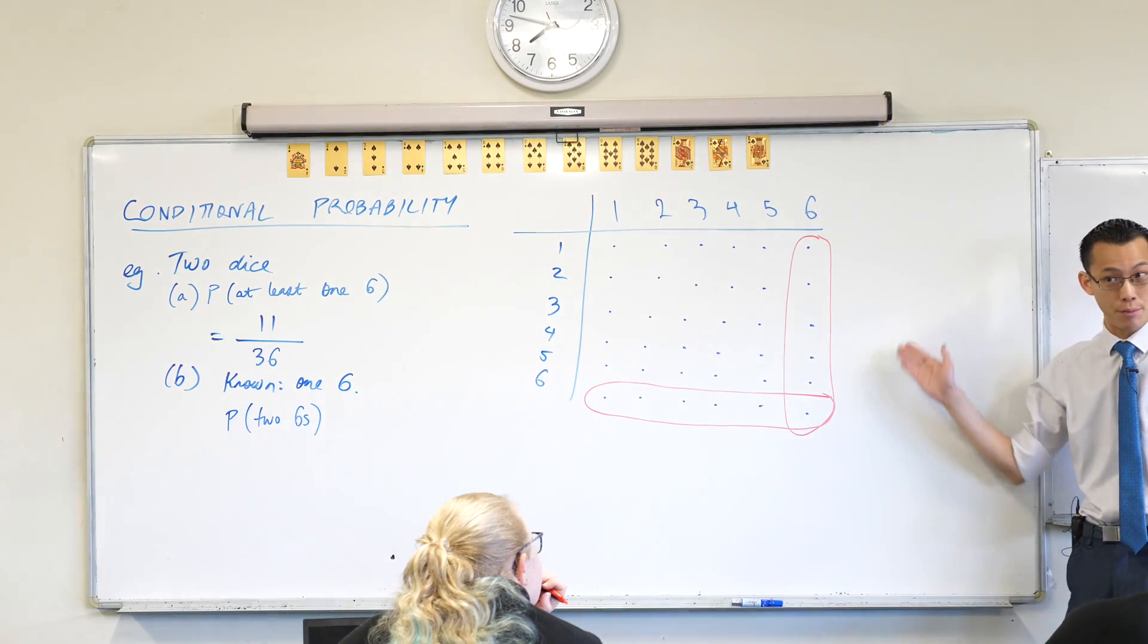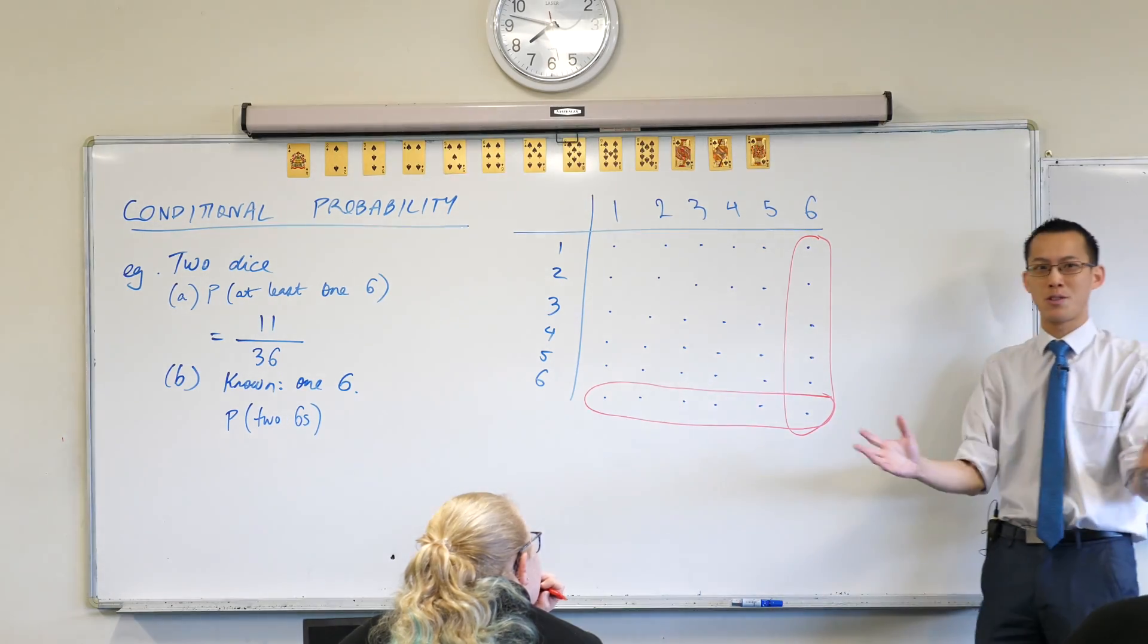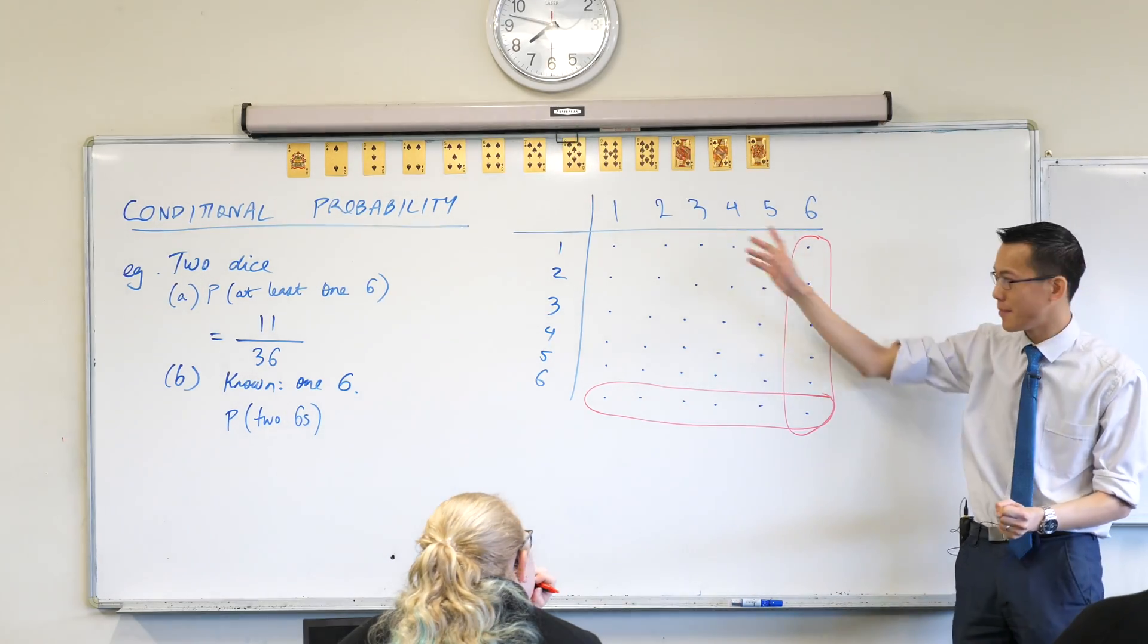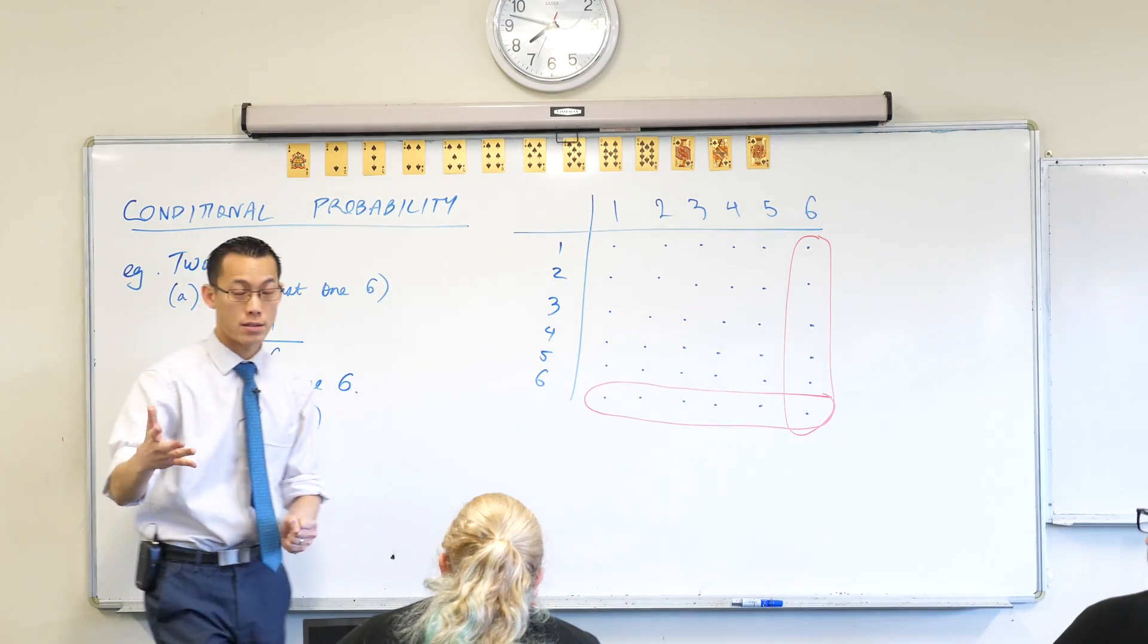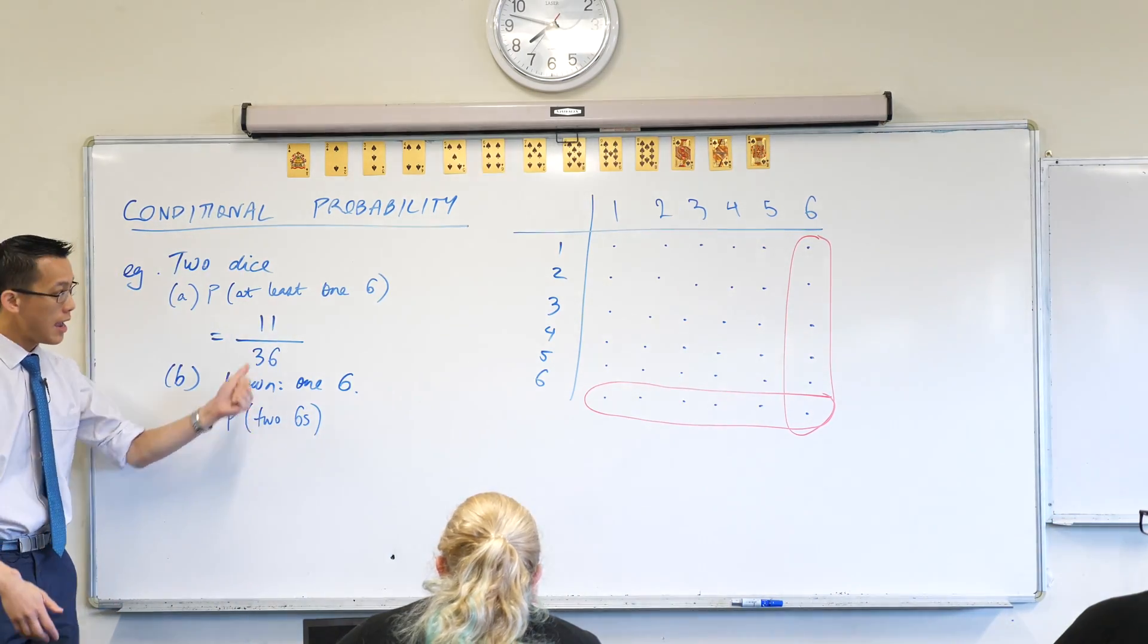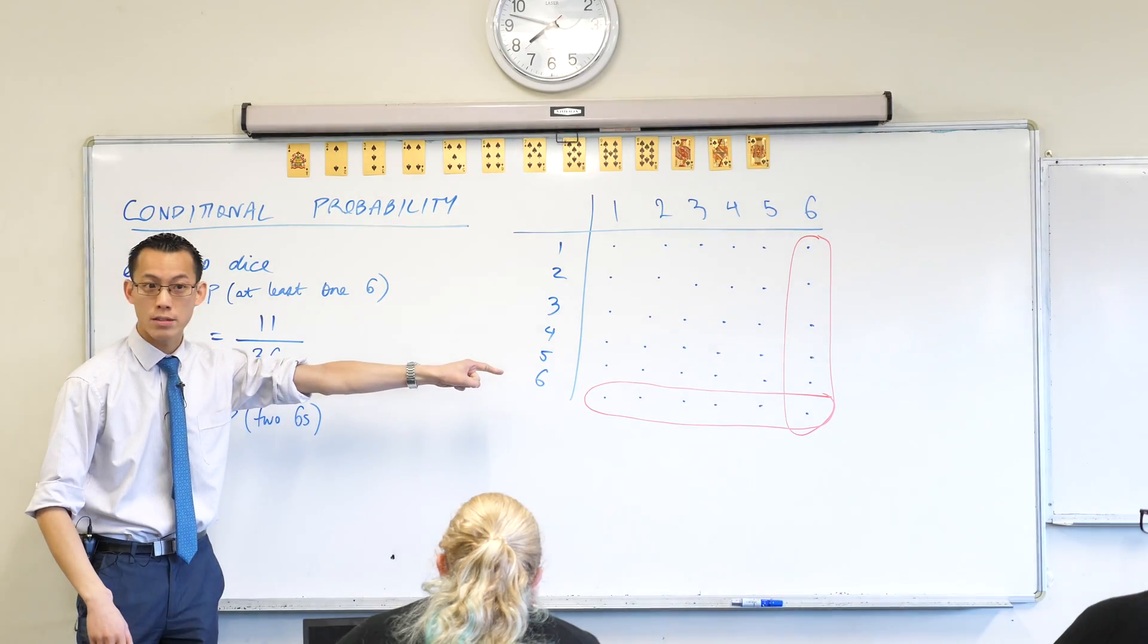One in six is a good instinctive response. However, if you think about what we have just established, this is the whole idea, this is why we all struggled with the medical example before. It's actually not the right sample space. This condition changes the sample space.